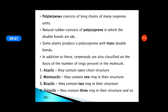Polyterpenoids consist of long chains of many isoprene units. Natural rubber contains polyisoprene in which the double bonds are in the cis form. Some plants produce polyisoprene units with trans double bonds.